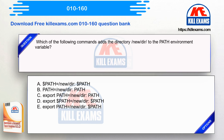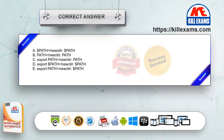Which of the following commands adds the directory /new/dir/ to the PATH environment variable? Option A: $PATH=/new/dir:$PATH. Option B: PATH=/new/dir:PATH. Option C: export PATH=/new/dir:PATH. Option D: export $PATH=/new/dir:$PATH. Option E: export PATH=/new/dir:$PATH. The correct answer is option E.